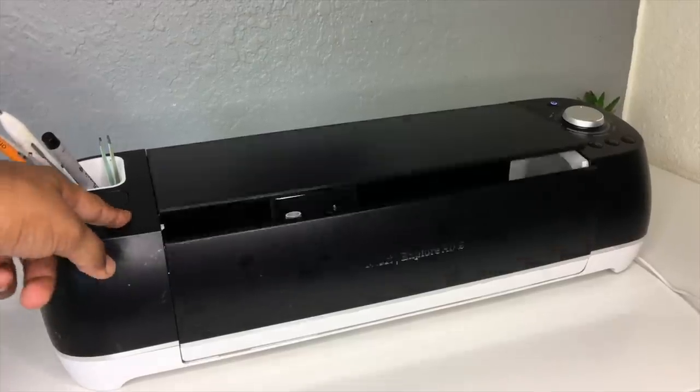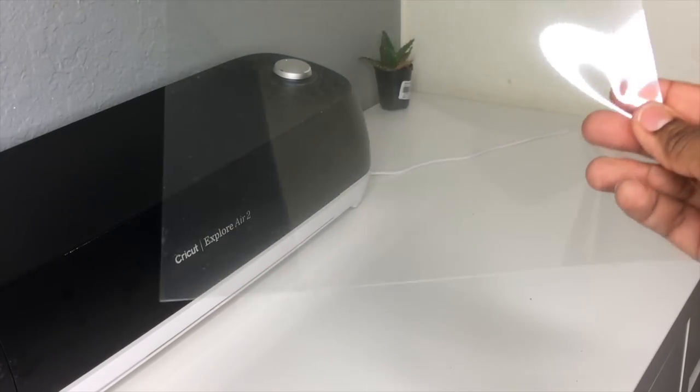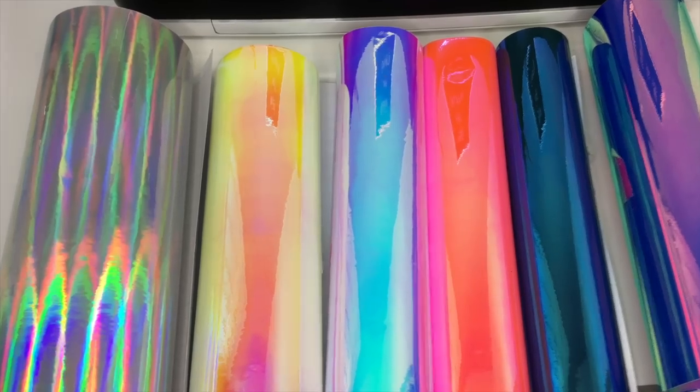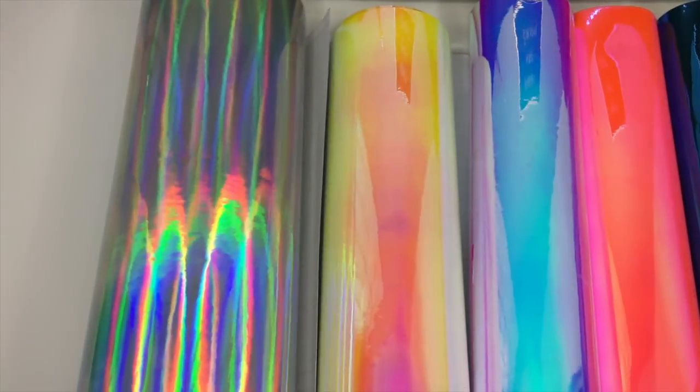For the second method, you're going to need a cutting machine like the Cricut Explore Air 2 or a Silhouette. You're also going to need transparency film again and vinyl. This is what I usually use for my stickers because I prefer the way that they look over heat transfer foil, but this method is a little bit more expensive.